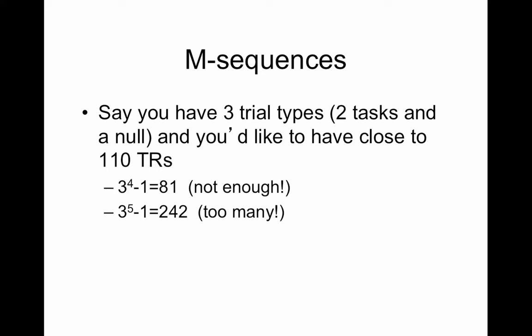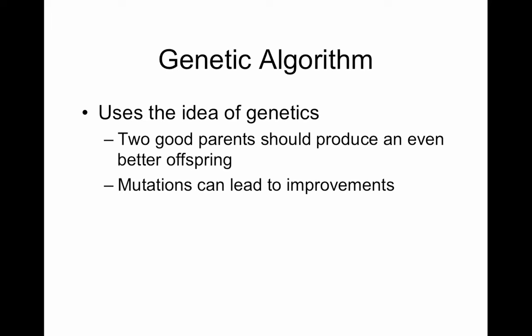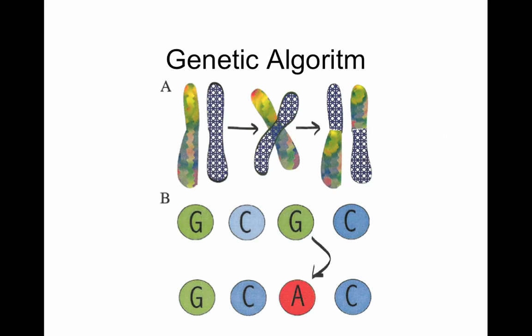The genetic algorithm uses the idea of genetics and this theory that two good parents should produce an even better offspring. In other words, mutations can lead to improvements. The idea here is you have two orderings and you cross them and you get new orderings.